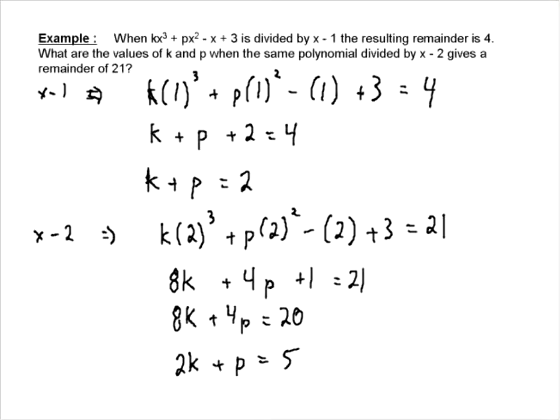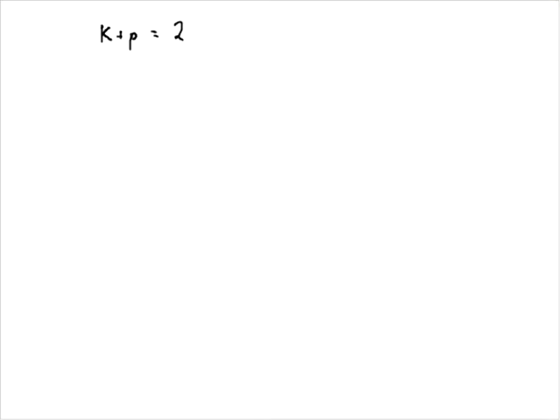So let's write the system of equations down. We have k plus p is equal to 2. And what was the second one here? 2k plus p equals 5. Now, this doesn't say, like in Chapter 1, solve by substitution, solve by elimination. You can choose whichever method you like.